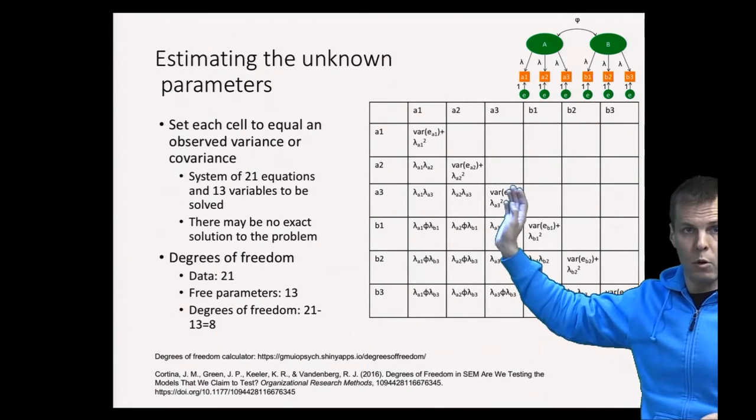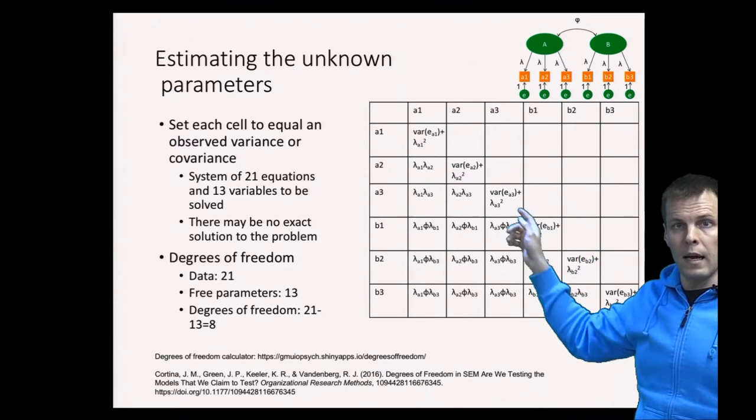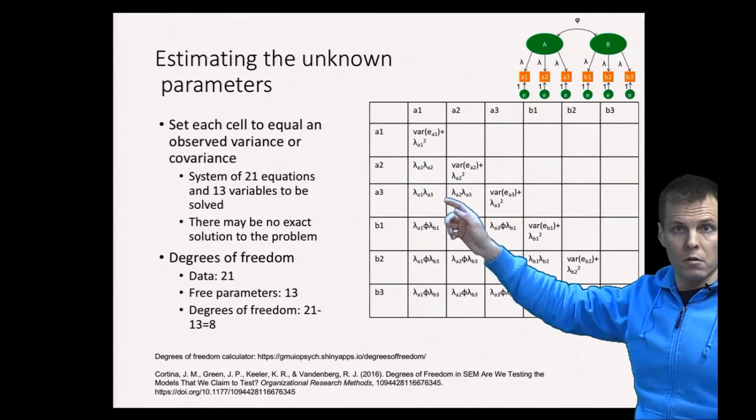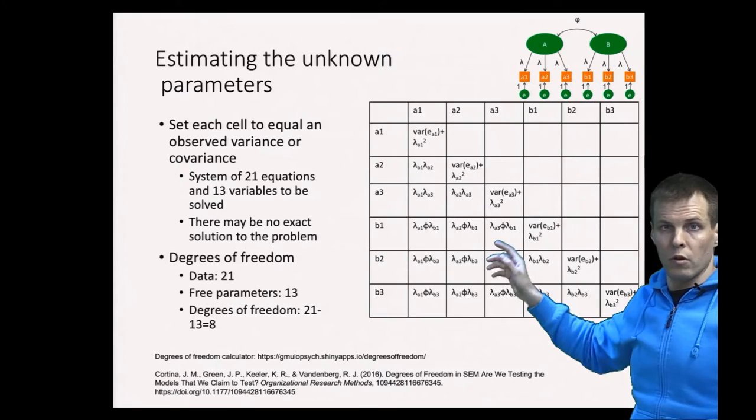We have 21 units of information because we have 21 unique elements in the correlation matrix of six indicators—six variances and 15 unique correlations. These don't count because they're not unique.